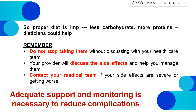It is better to reduce carbohydrates in your diet and increase proteins; dietitians can help decide what food to take. Importantly, do not stop taking steroids just because your sugar levels are going high — stopping steroids can have a negative impact on cancer treatment. Discuss these side effects with your doctors and contact your medical team if you are not feeling well. Adequate support and monitoring is very necessary to reduce these complications.